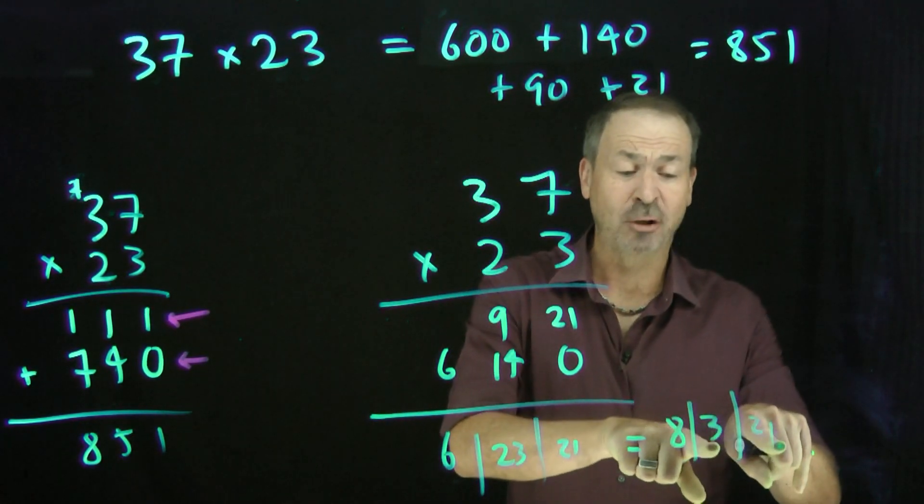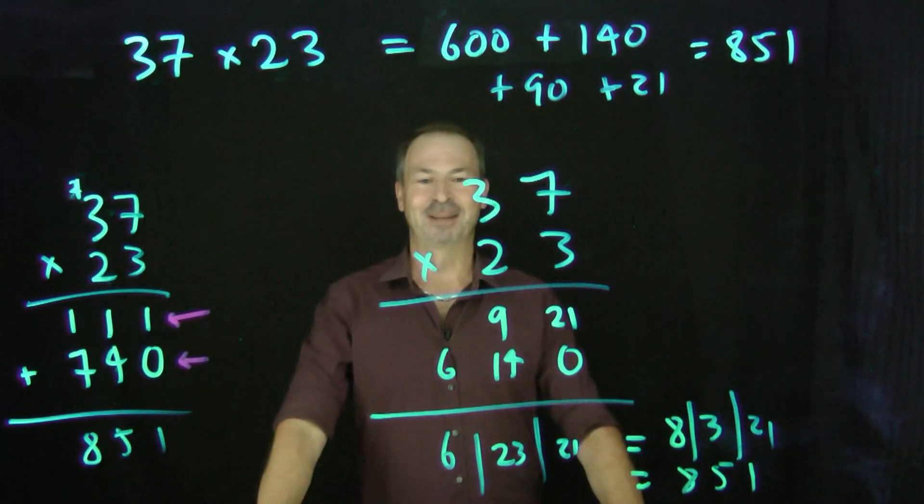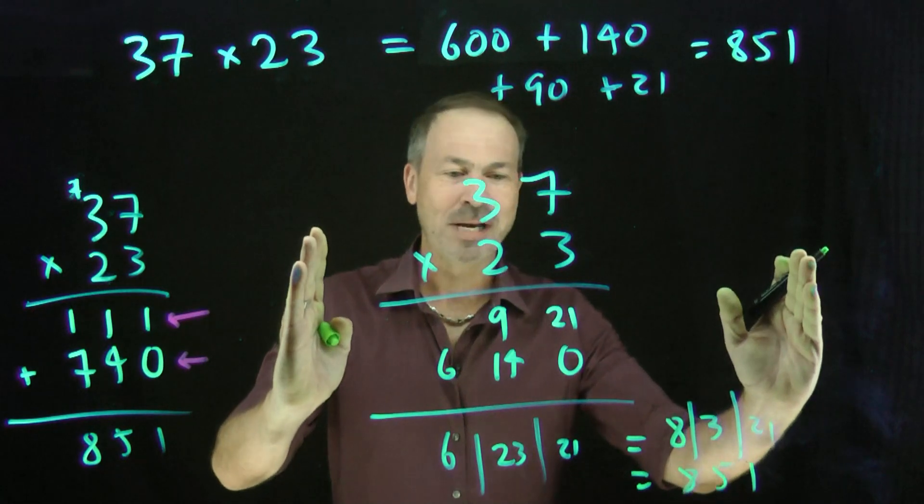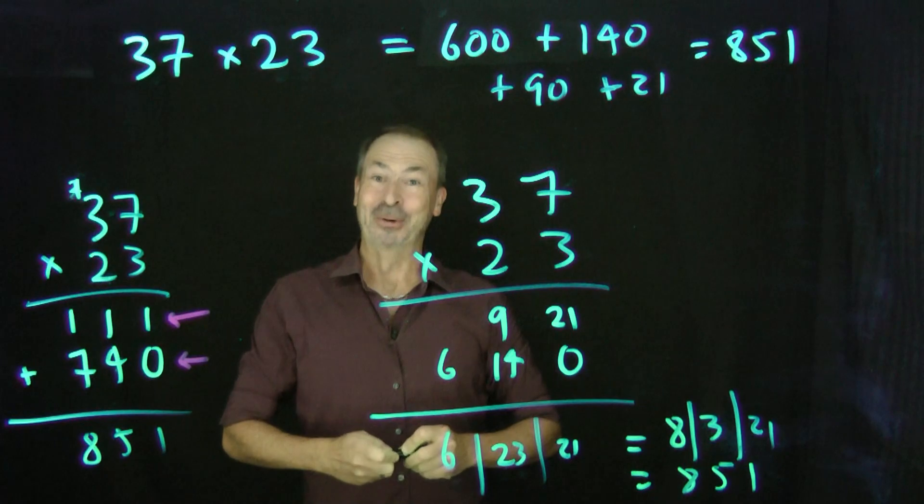Two explosions. Kaboom and Kabal. Leave 1 behind. Extra 2 dots there. 8. 5. 1. There it is. There's the exploding dots mindset applied to the standard long multiplication algorithm. That's kind of cool. Okay. Let's do another one.